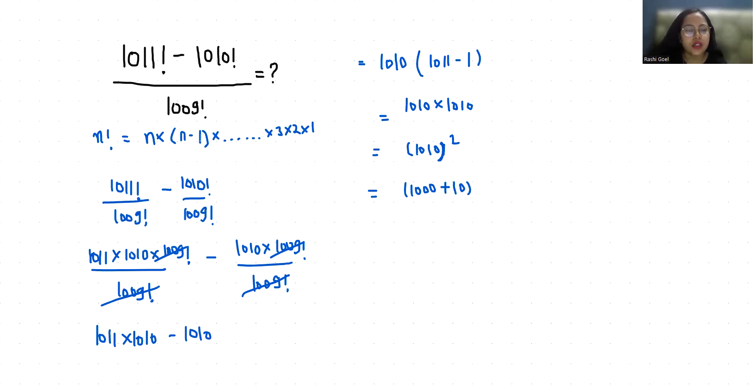Now I am going to use the identity (a + b)² = a² + b² + 2ab.